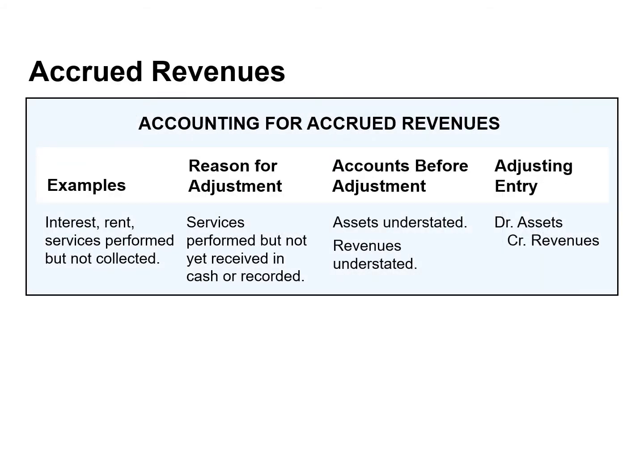Revenues for services performed but not yet recorded at the statement date are accrued revenues. Prior to the adjustment, both assets and revenues are understated. The adjusting entry increases an asset account as well as a revenue account.